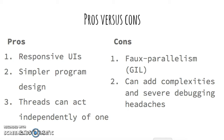On the other hand, multi-threading in Python has some serious downfalls. Due to Python's GIL, multi-threaded programs do not benefit from any speed improvements. To learn about implementing true parallelism in Python to improve program performance speed, check out Python's multi-processing module. As well, multi-threading can add complexities and severe debugging headaches because of its non-deterministic nature.